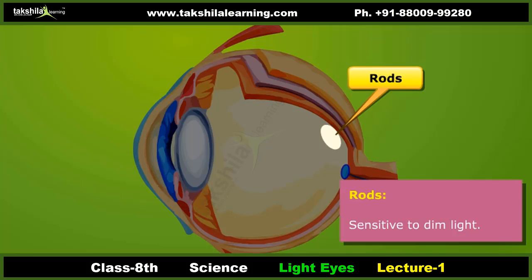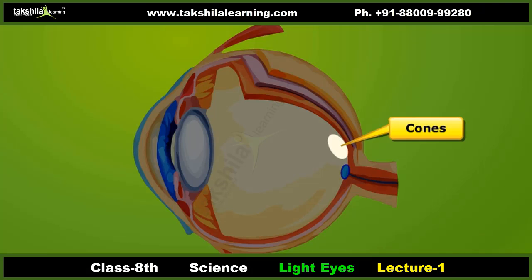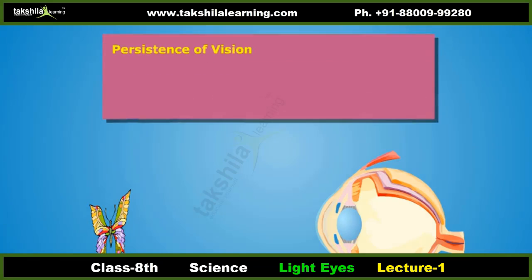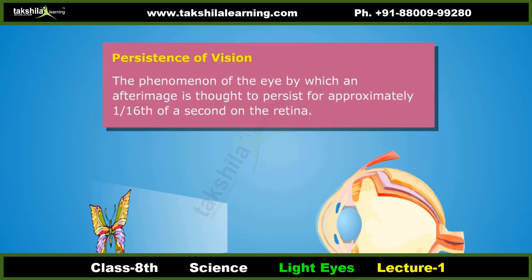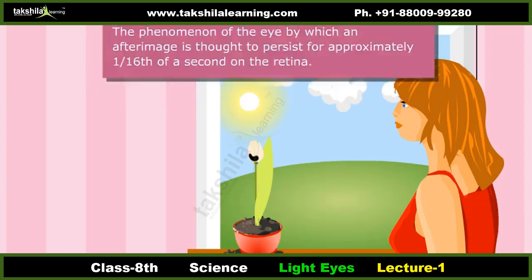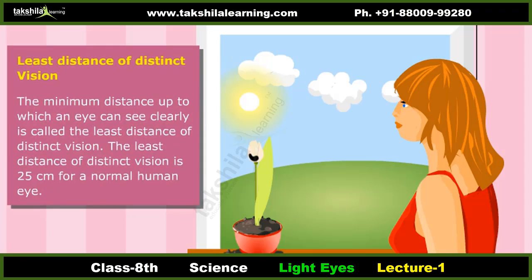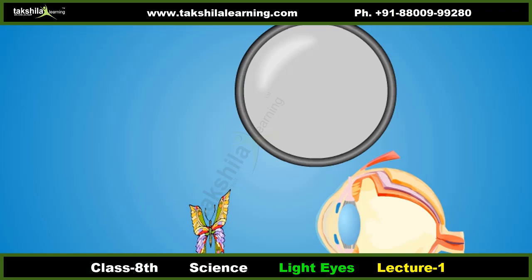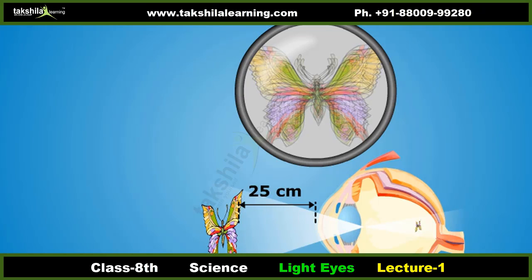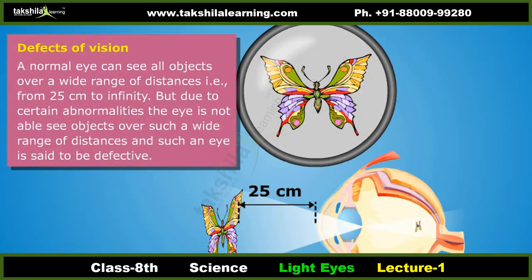Rods function mainly in dim light and provide black and white vision. Cones support daytime vision and the perception of color. Persistence of vision is the phenomenon by which an after-image is thought to persist for approximately 1/16 of a second on the retina. The least distance of distinct vision — the minimum distance at which an eye can see clearly — is 25 centimeters for a normal human eye.